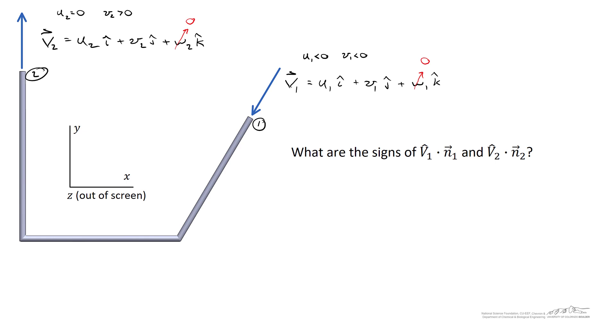The second question asks: what are the signs of v1 dotted with the outward facing unit normal n1, and v2 dot n2? To answer this, we need to understand what a dot product is and what an outward facing unit normal represents.